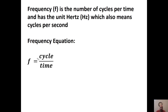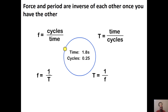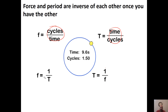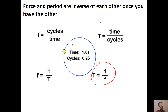Frequency is the inverse of period. Frequency is measured in Hertz — the same as cycles per second. If you had 50 cycles in 10 seconds, that's 5 Hertz. Frequency is cycles divided by time; period is time divided by cycles — they're inverses of each other. Once you know frequency, you can take its inverse to find period, or just switch the cycles and time.